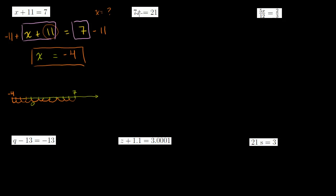Now a new problem: 7 times some number x is equal to 21. How do we get it in the form x is equal to something? If I divide 7 times x by 7, I'm left with just x. 7 times something divided by 7 is just that something.